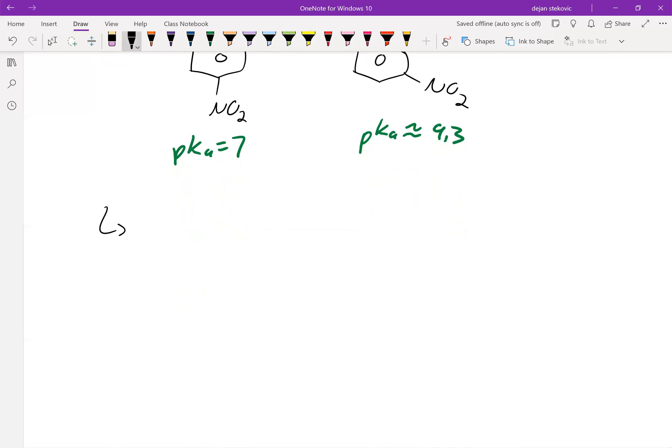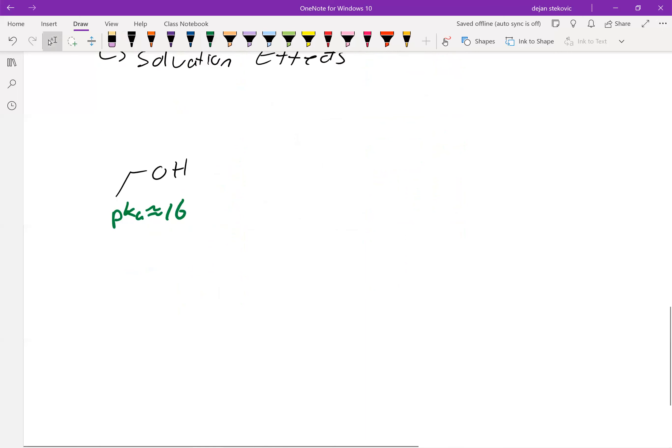And then finally, we have solvation effects. So for example, ethanol has a pKa of 16, as we've said, whereas tert-butanol has a pKa of approximately 18. So we can see that tert-butanol is less acidic than ethanol. And there's no resonance or really induction reasons here.